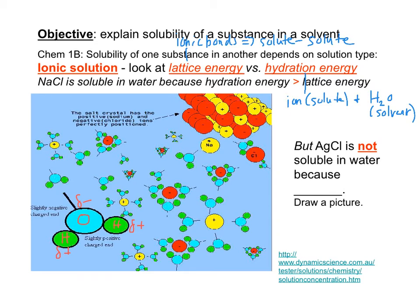What about silver chloride? The chemical force between silver and chloride ions cannot be overcome by the chemical force between the silver ion and water or the chloride ion and water. So silver chloride is not soluble.